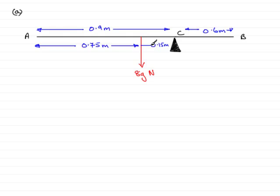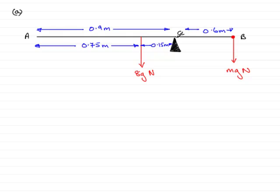We've got the measurements in and we've got one force — the weight of the rod. We also have a particle attached at B of mass m, so we need the force acting downwards, the weight of the particle, which is mg newtons. To support the forces acting downwards on the rod, there's got to be a force acting upwards, and the only place that can come from is the support here — a reaction force, which I'll call R newtons.